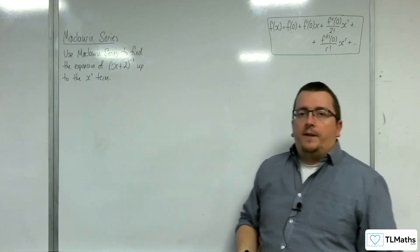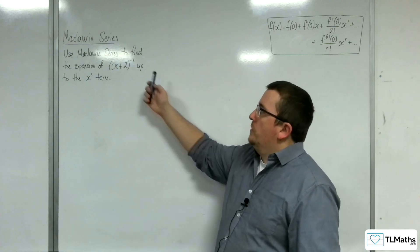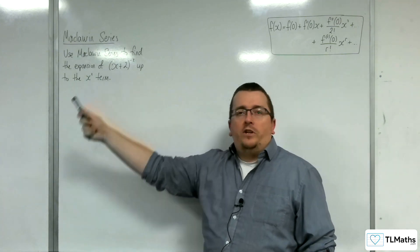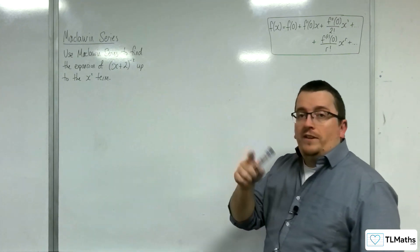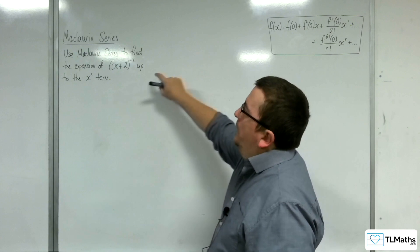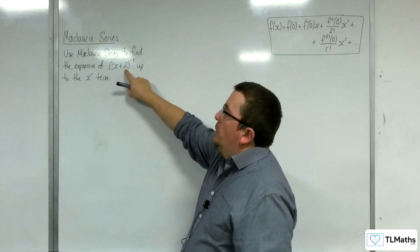Now ordinarily you probably wouldn't use Maclaurin series to expand this. You would use the binomial expansion formulas to do that. Now obviously you need to take care because of that 2 that you've got there.